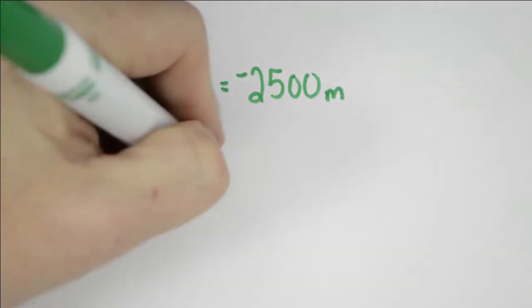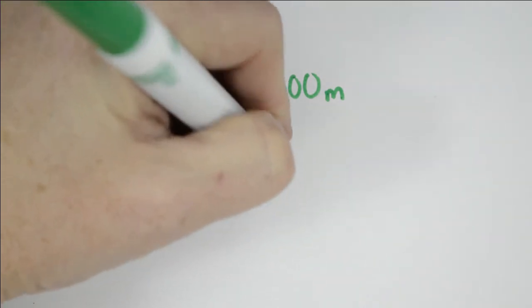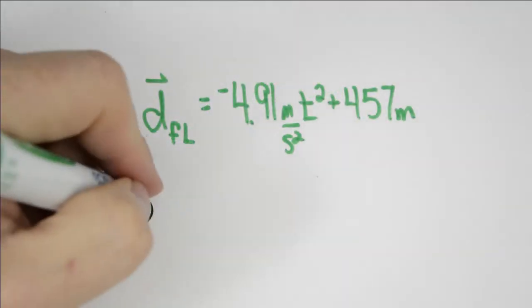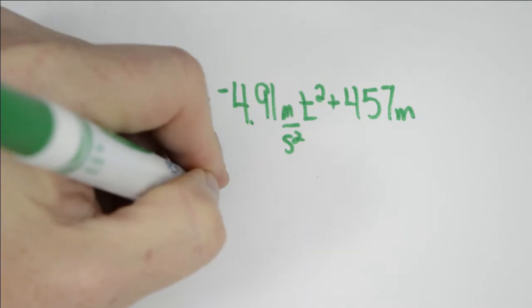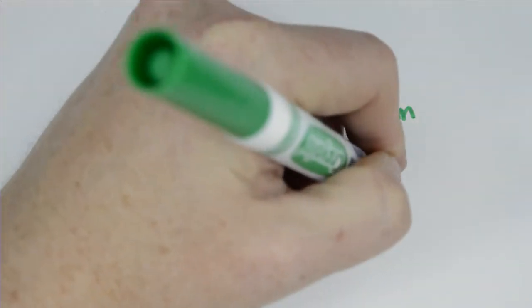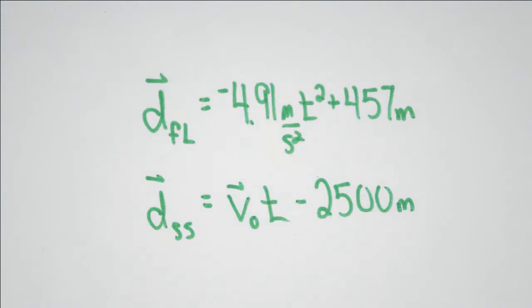Superman is going to start 2,500 meters to the left. We don't know his velocity, and we do know his acceleration is going to be 0 because all of that acceleration happens instantaneously. So Superman's position is going to be his velocity times time minus 2,500 meters.